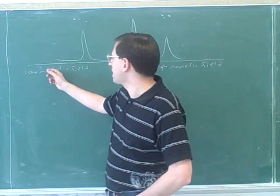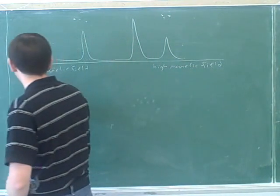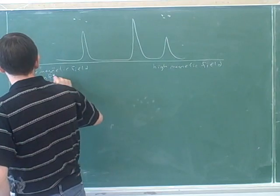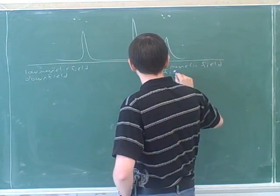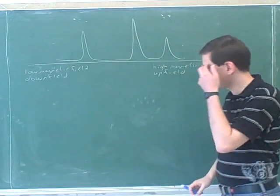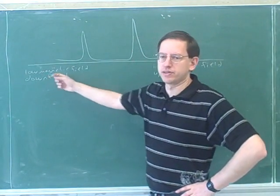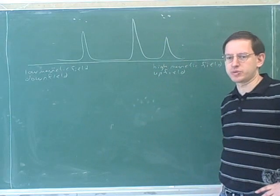And the peaks on the right were absorbed at a high magnetic field. Therefore, the left-hand side is often called downfield, and the right-hand side is often called upfield, because this is a low magnetic field absorption and this is a high magnetic field absorption.